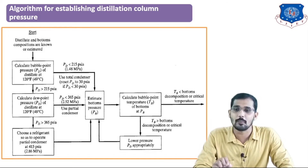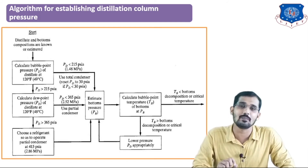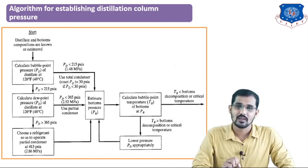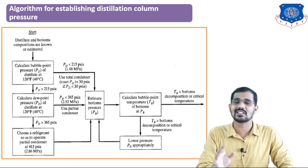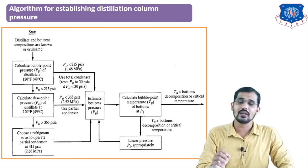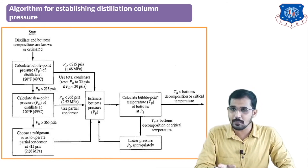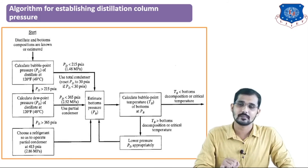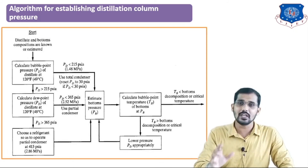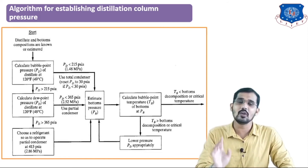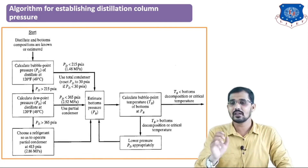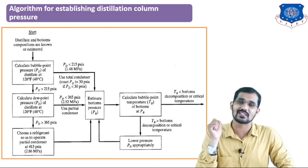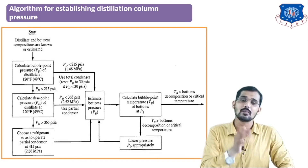You choose a refrigerant so as to operate the partial condenser at 415 psi. After choosing the refrigerant, you go to the next step — estimate the bottom pressure. This step is only required when your pressure values are not satisfying. If the bubble point pressure is obtained correctly at the initial stage, there is no need to calculate the dew point pressure or refrigerant conditions. We then select the partial condenser, getting two streams: a liquid stream and a distillate.